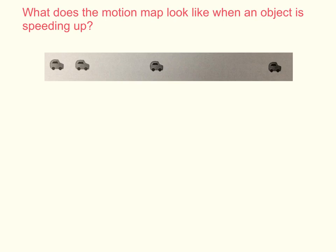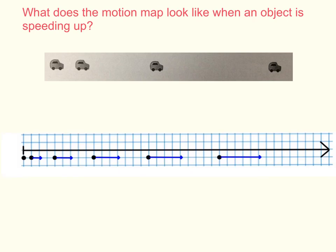In this case, the motion map would have dots that are getting further and further apart every second. The blue arrows show the amount of velocity, how much the velocity is changing. The long arrow shows the positive direction, so we can see that this object is speeding up as it's moving in the positive direction.